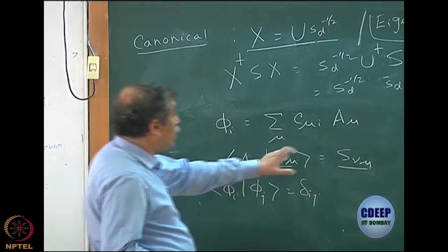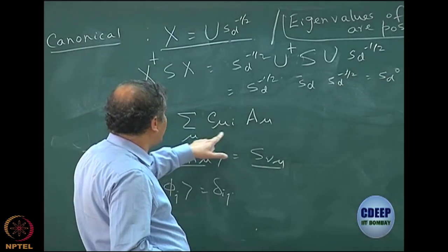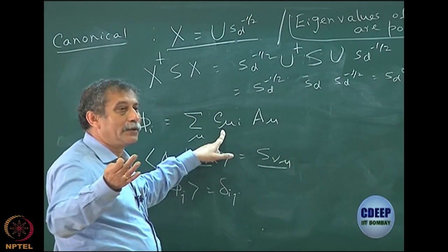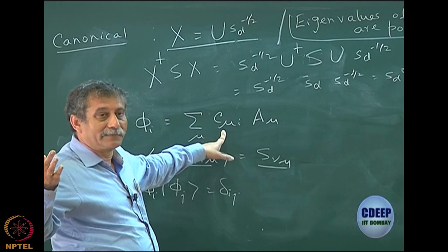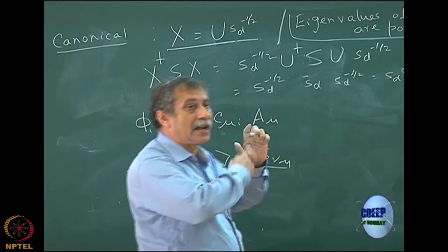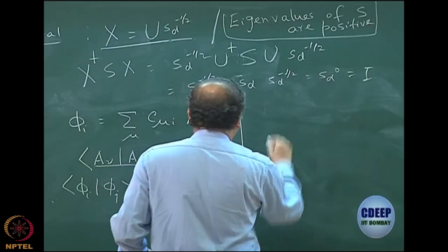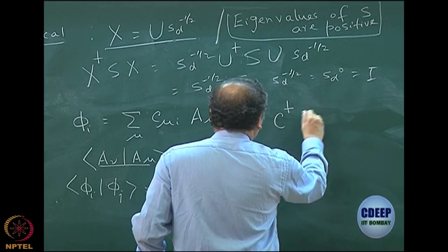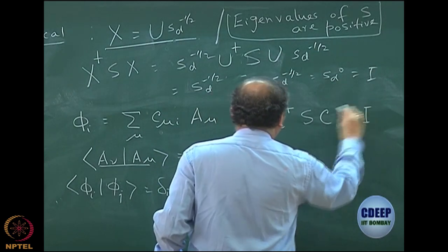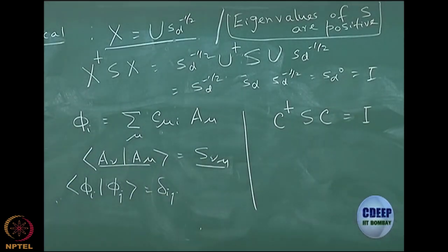If the atomic orbitals were also orthonormal, then of course this coefficient would have a very simple relation — C†C would have been the identity matrix, which is what happens when you expand one orthonormal function in another orthonormal set. But this is no longer true here. In fact, what is true is that C†SC equals the identity matrix. You should be able to prove this as a practice problem.